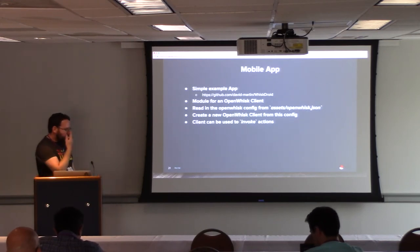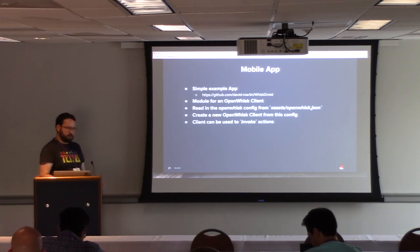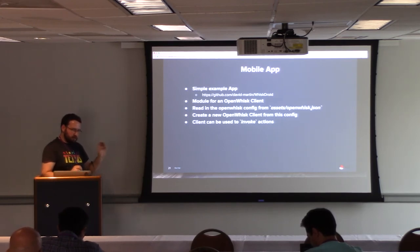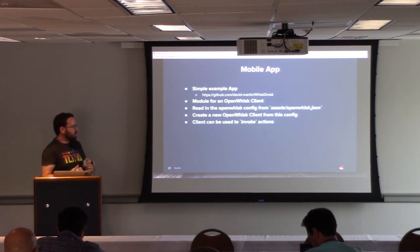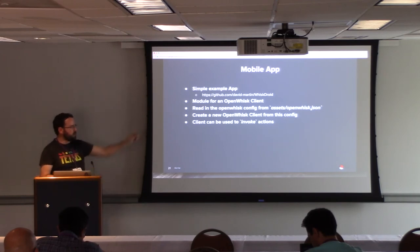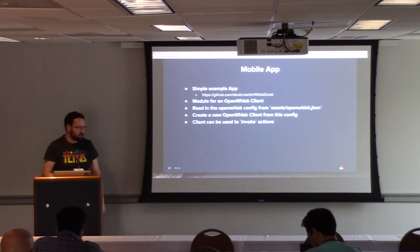The mobile app itself is a simple example with one button for calling the serverless action. There's a module for the OpenWhisk client that abstracts the communication with OpenWhisk. We read the OpenWhisk config from a JSON file — dumped out using the OC command from the previous slide. In the activity, we create a new OpenWhisk client from that config, and using that client we can invoke actions.